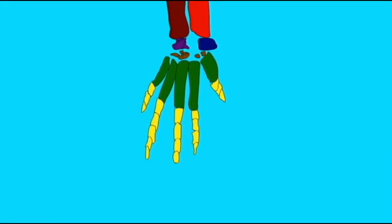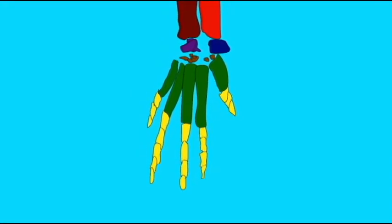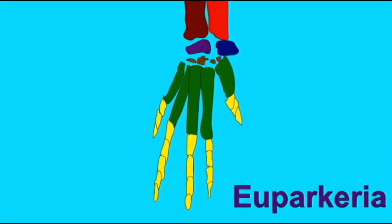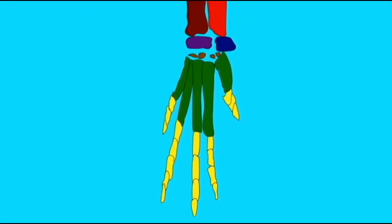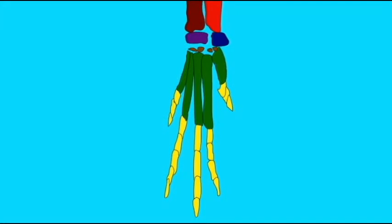Thecodonts slowly evolved the highly modified foot of the dinosaurs. The phalanges, the toe bones here in yellow, and the metatarsals of the foot in green became longer and longer, so the dinosaurs would eventually walk on their toes.